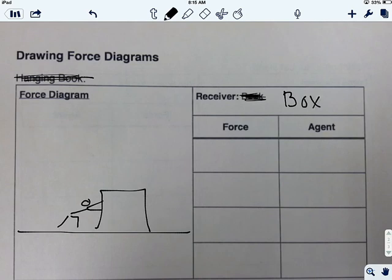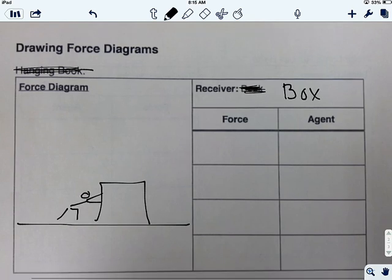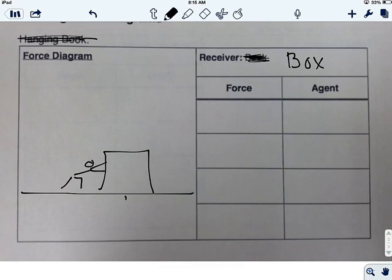My receiver here is going to be the box. So that was step one, which was drawing the diagram. And step two was labeling the receiver. Okay, now I want to think about all the different stuff that's acting on the box. So first off, I know that there's gravity pulling the box down. And I'm going to label that FG. Now, it's not falling through the floor, so that means that there's also normal force pushing it up. That's FN.